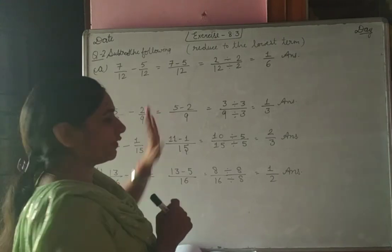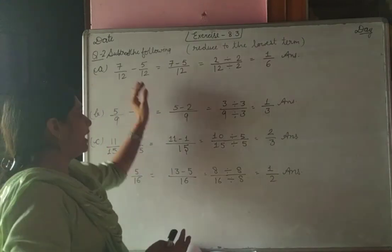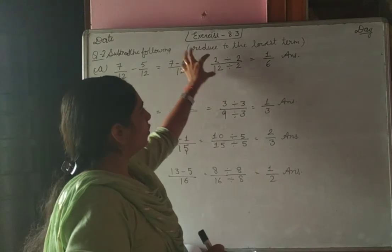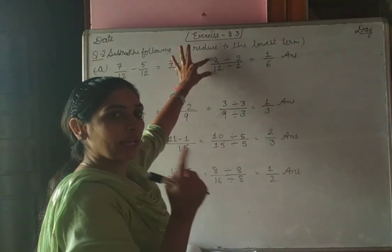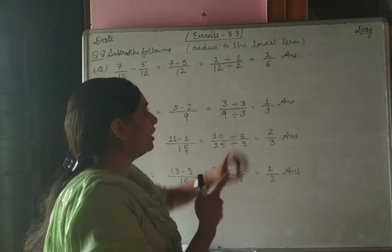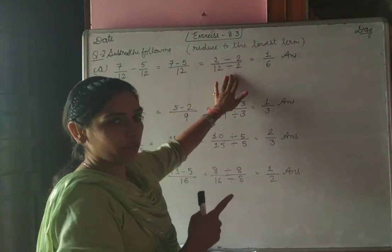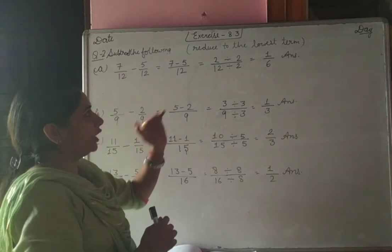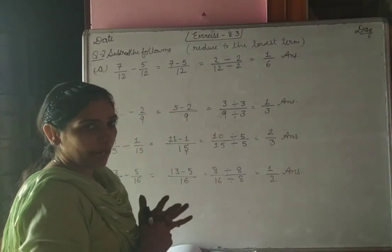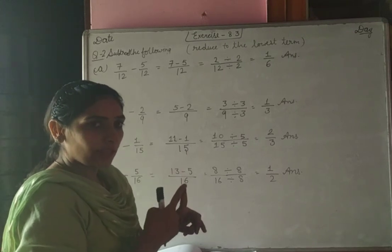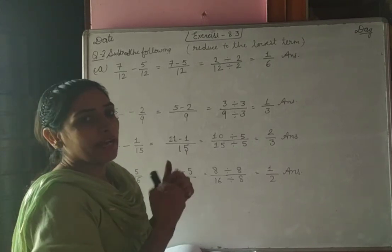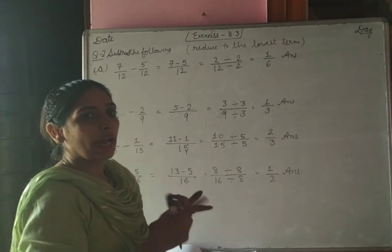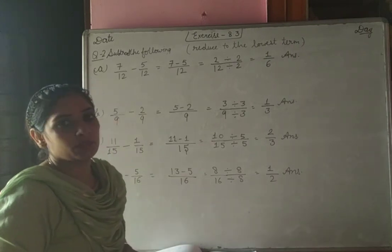So for addition and subtraction of like fractions: the LCM is the denominator itself, you directly add or subtract the numerators, then find the HCF of numerator and denominator. If the HCF is not 1, divide both by the HCF to reduce to lowest term. In Exercise 8.3, we discussed two questions — the first on addition and the second on subtraction of like fractions. The next question we will discuss in the next class, where we will learn how to add and subtract unlike fractions. Thank you very much, dear students.